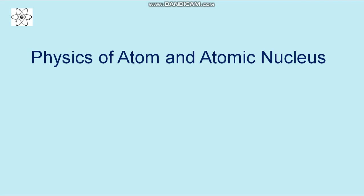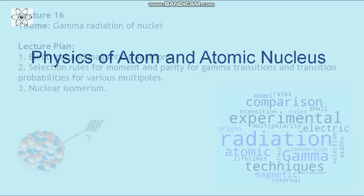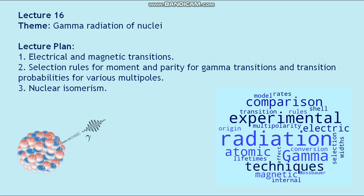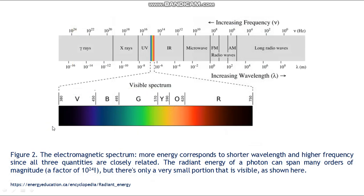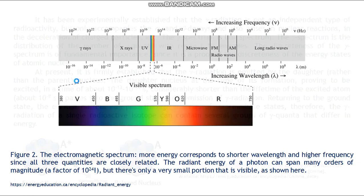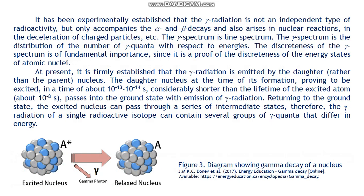The subject of physics of atom and atomic nucleus, lecture number 16: gamma radiation of nuclei. The figure shows the different types of decay and the penetrating power of the corresponding radiation: alpha radiation, beta radiation, x-rays, gamma rays, neutrons. The electromagnetic spectrum gamma rays region. It has been experimentally established that gamma radiation is not an independent type of radioactivity, but only accompanies the alpha and beta decays and also arises in nuclear reactions, in the deceleration of charged particles, etc.